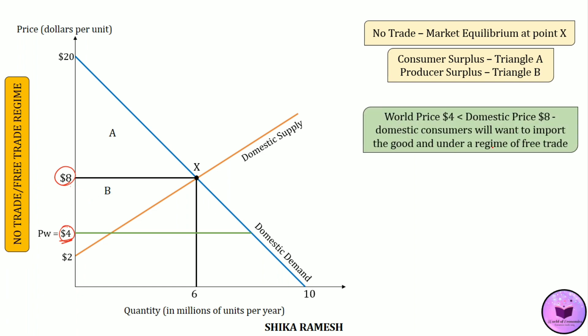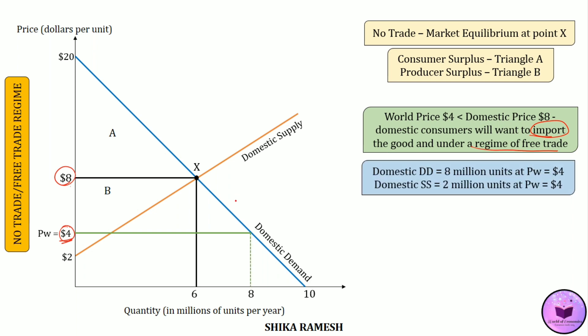If the country follows a free trade regime, then domestic consumers will want to import the good and will be able to do so without any restriction. At the price of $4 per unit, the domestic demand is 8 million units whereas domestic producers are willing to supply only 2 million units. If domestic consumers import at $4, domestic producers will also lower their price to $4 — otherwise no domestic consumers would purchase from them, as they can get the product at a much lower price from the foreign market. So if domestic producers do not lower their price to the world price, they will lose the entire market.